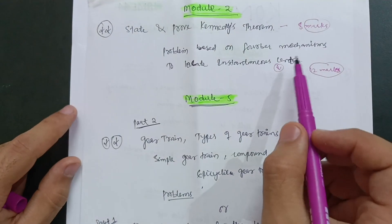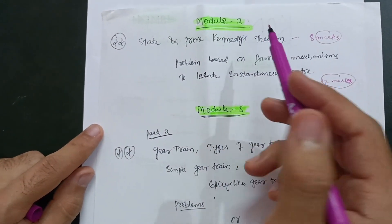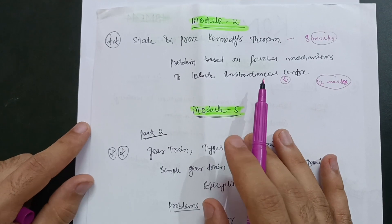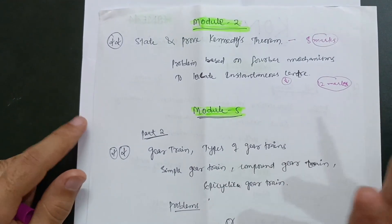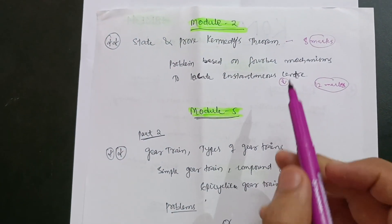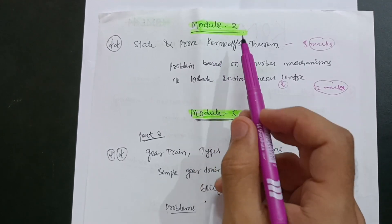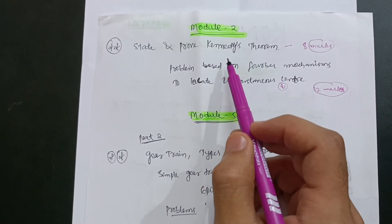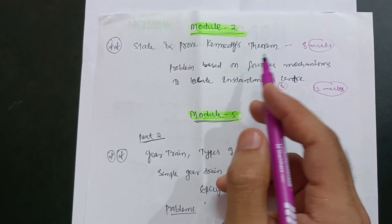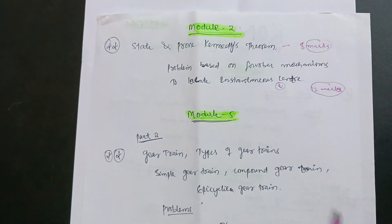You will easily score 20 marks in module 2 as well. I am making these videos mostly for backlog students. This is the passing strategy for module 2 - make 20 marks possible by focusing on instantaneous center problems.